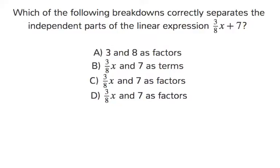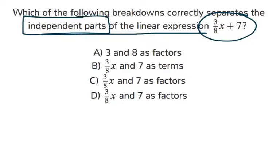Which of the following breakdowns correctly separates the independent parts of the linear expression 3 eighths x plus 7? Well, since we're talking about the independent parts, we're talking about the variable.